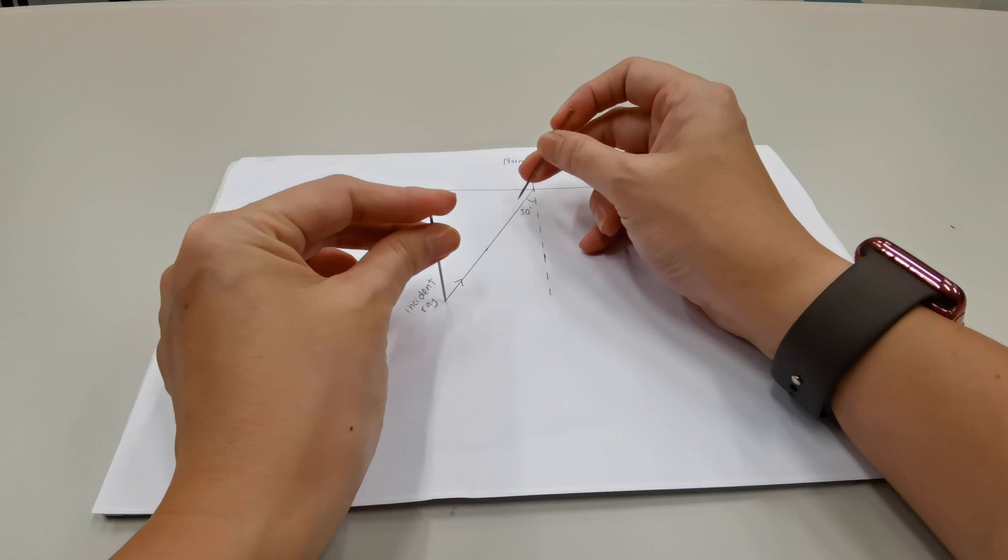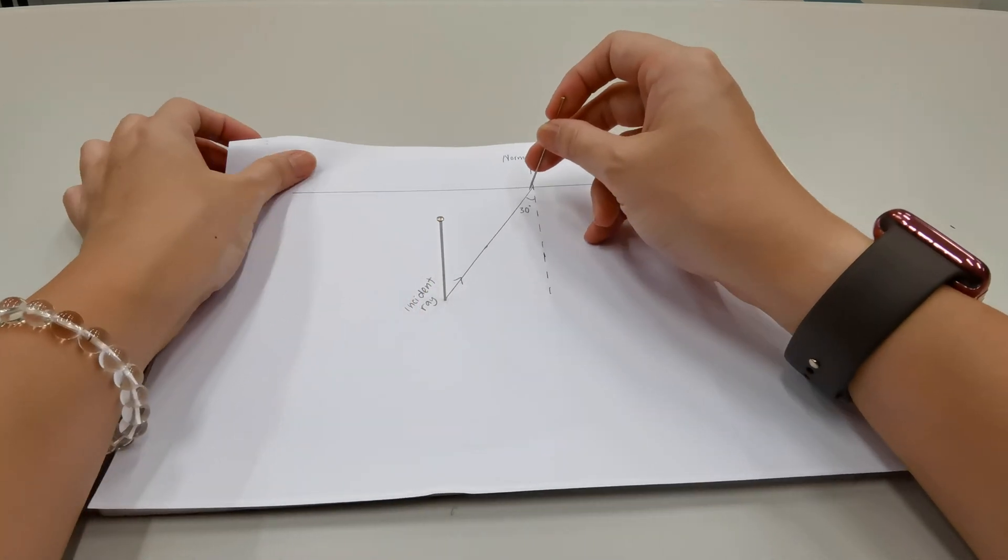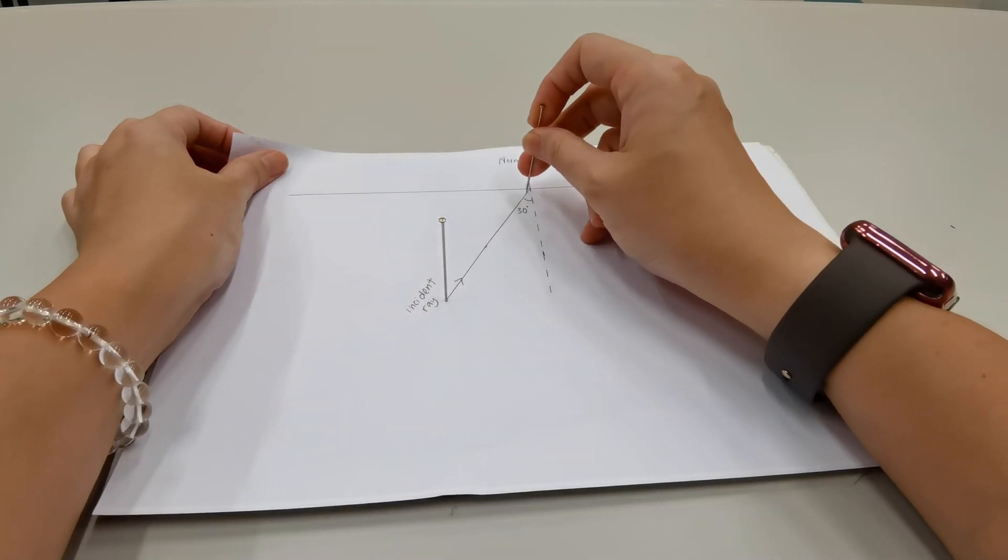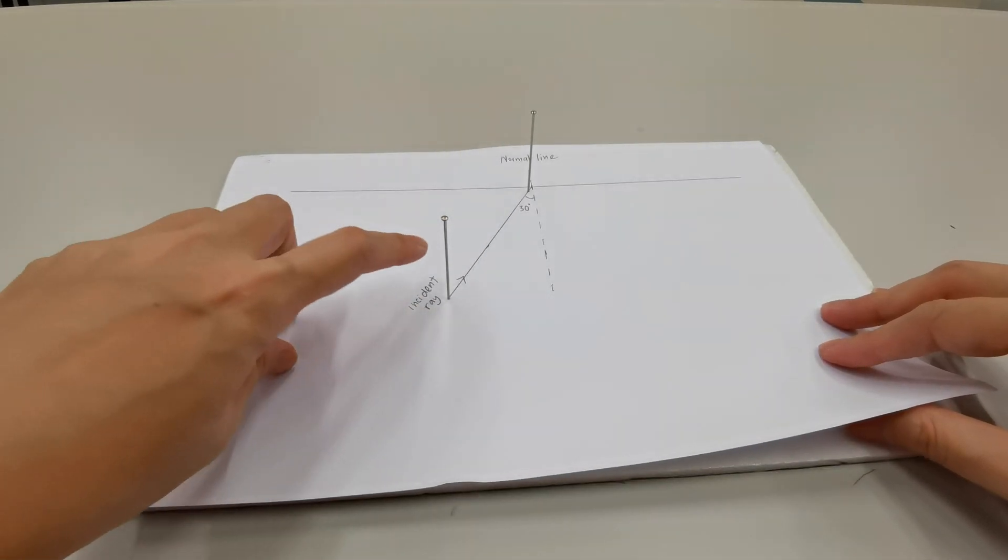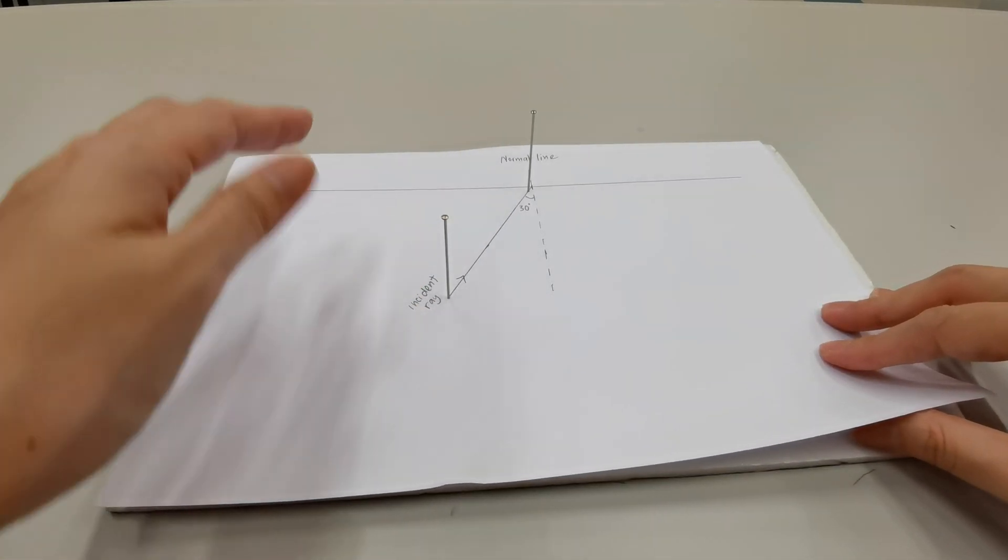So I'm going to place the pins one here, and one really close to where the mirror would be. So the purpose of the foam board is so that we can place the pins in, and the pins would stay upright.